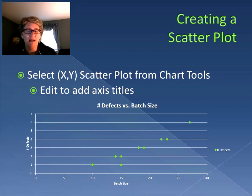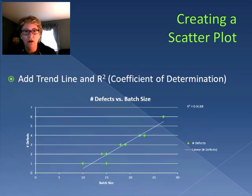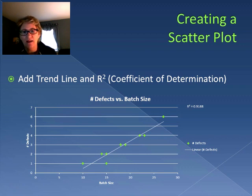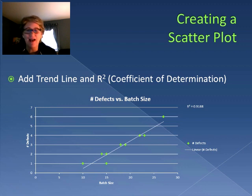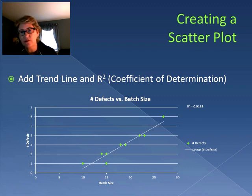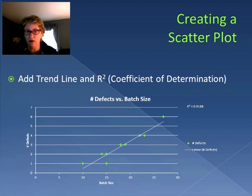Then we add a trend line — and in addition to that, we can add the r-squared, which is the coefficient of determination. The trend line typically starts with a linear trend by default, and that shows how the relationship works. In this case, as batch size increases so will the number of defects — it's a positive line going upward, showing a positive relationship between those two variables.